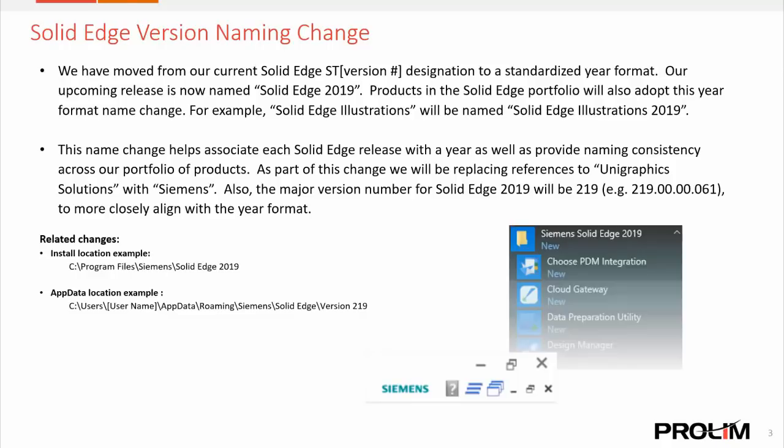Some other things that have changed include the install location, which is now in C:\Program Files\Siemens\Solid Edge 2019. Also, the app data location where customizations like your user interface or radial menu are saved has moved to a roaming Siemens folder, Solid Edge version 219.